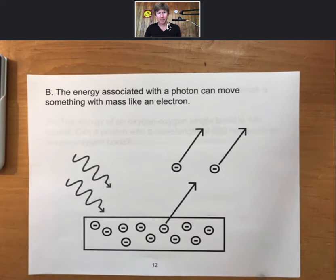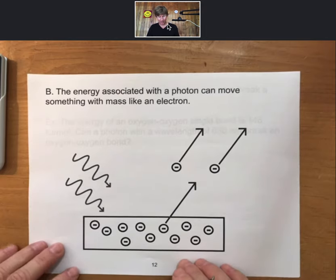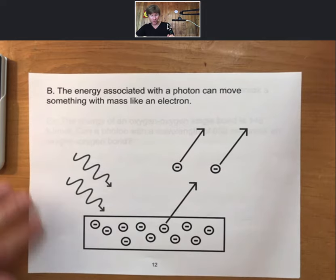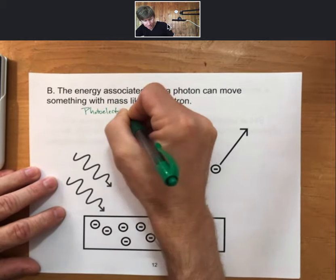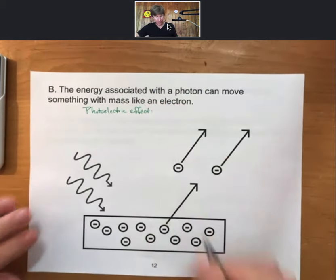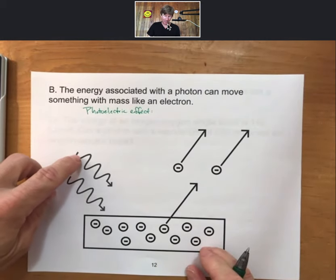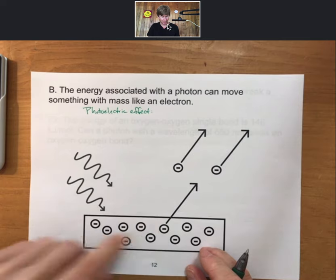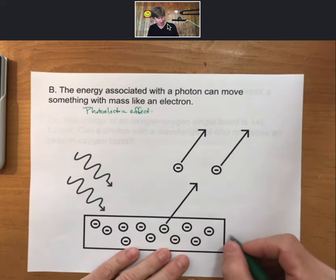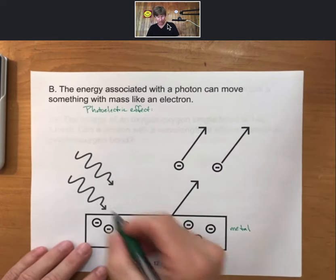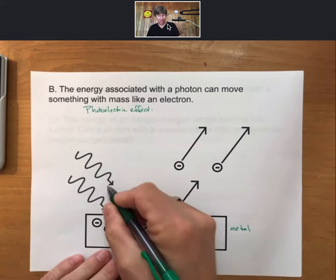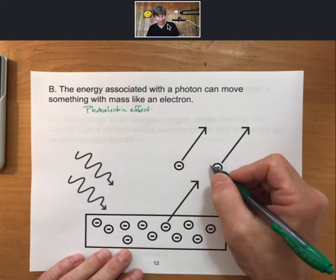Now a photon has energy. The energy associated with a photon can move something with mass, like an electron, and this is a picture of what's called the photoelectric effect. For the photoelectric effect, when a photon comes into a substance, oftentimes the substance is a metal because metals tend to have fairly loosely held electrons. When a substance comes in, if it has enough energy, it can eject an electron.